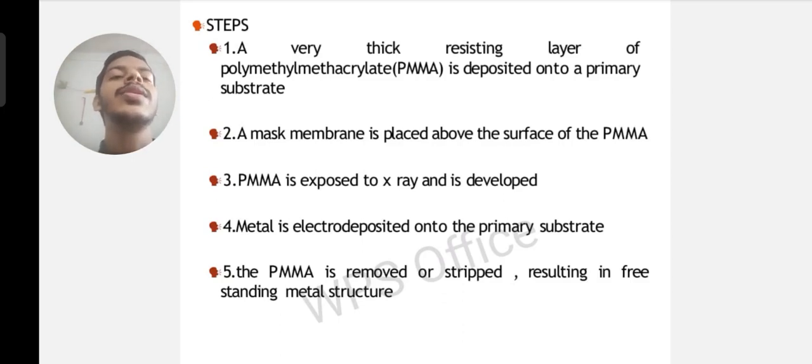PMMA is exposed to X-ray and is developed. Metal is electrodeposited onto the primary substrate. The PMMA is removed or stripped, resulting in freestanding metal structure.